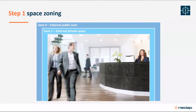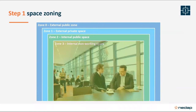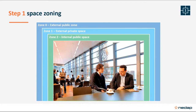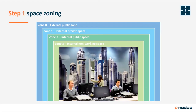Zone three, or the internal non-working space, contains hallways, meeting rooms, cafeterias, and other areas inside your building where people aren't actually doing work. Zone four is internal working space — it is the place where work is actually being done. This is the private space.